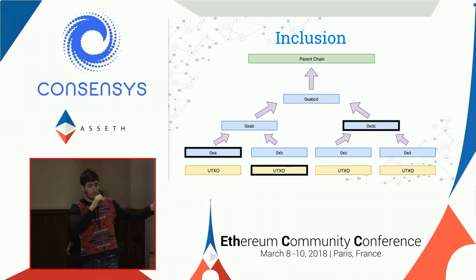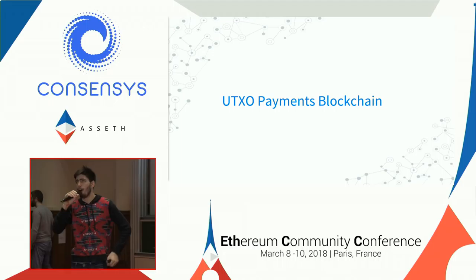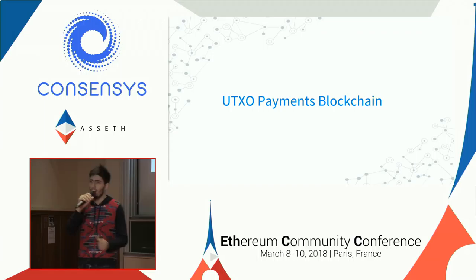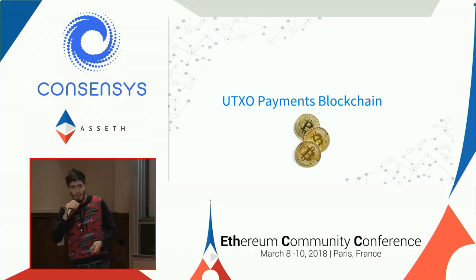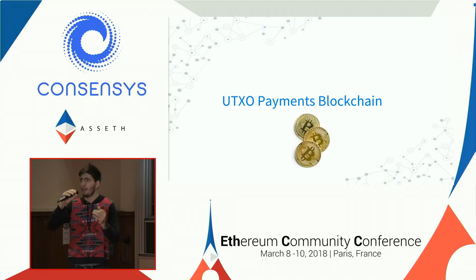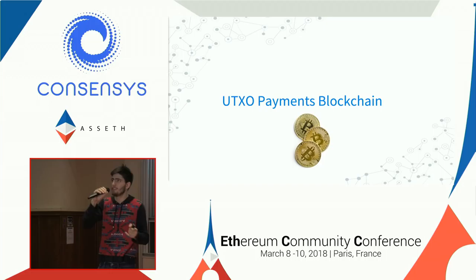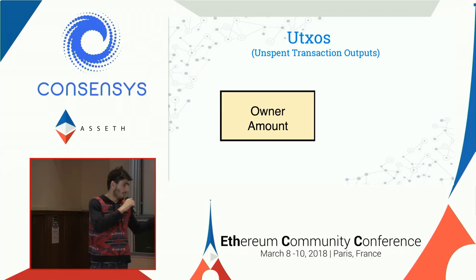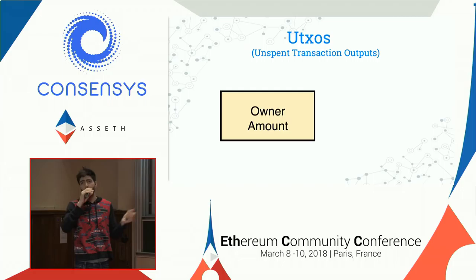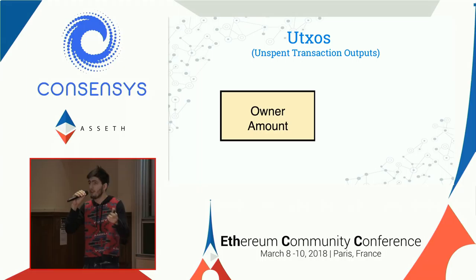Now let's talk about what's happening now with plasma. Plasma MVP — kind of the first spec written up by Vitalik — is basically a UTXO payments blockchain, significantly similar in functionality to Bitcoin. That's the first stage of pushing plasma from a white paper into something actually implementable. Right now there are multiple teams working off that and iterating further. Transactions use UTXOs — unspent transaction outputs — which need to specify an owner and an amount: who has the money and how much.